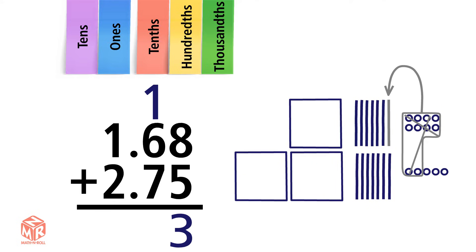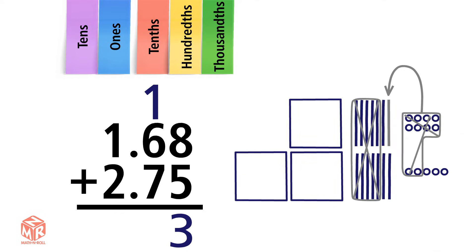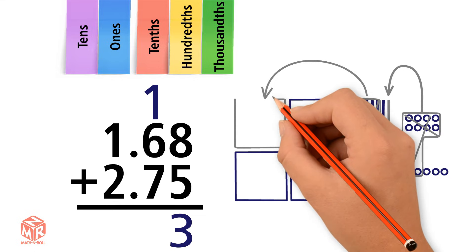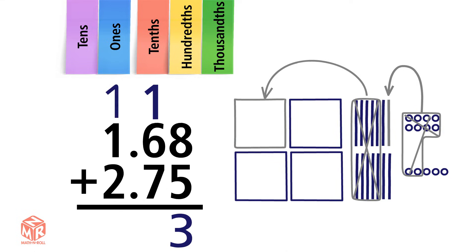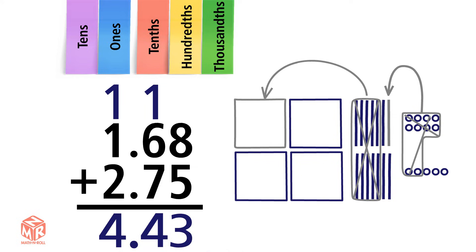14 is more than 9, so we have to regroup again. We're left with four tenths and we put that in the tenths column. Bring down the decimal. Now we add the ones. 1 plus 1 plus 2 equals 4. So 1.68 plus 2.75 equals 4.43.